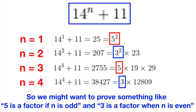Ideally, it seems that we would want to prove something along the line of 5 is a factor of 14 power n plus 11 when n is odd, and 3 is a factor when n is even. If we could prove something like this, then it is obvious that 14 power n plus 11 cannot be a prime number, since it will always have a factor of either 5 or 3.